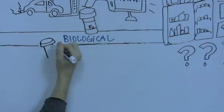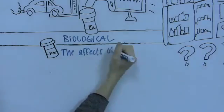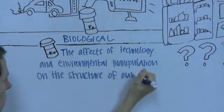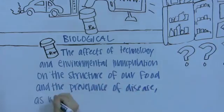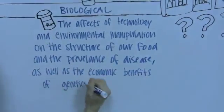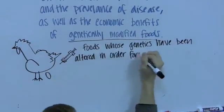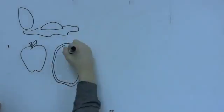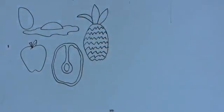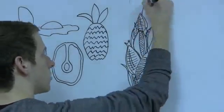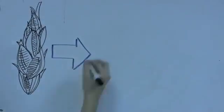Biological. The effects of technology and environmental manipulation on the structure of our food and the prevalence of disease, as well as the economic benefits of genetically modified foods. Genetically modified foods are foods whose genetics have been altered for them to be more appealing to the consumer. Until the Neolithic Revolution, hunter-gatherers ate primarily raw ingredients. With the birth of agriculture, multi-used crops such as corn were produced to support the large population increase.